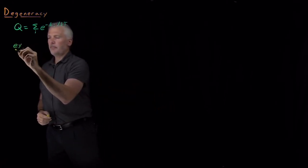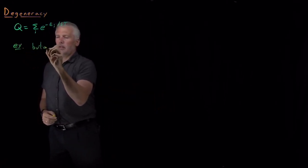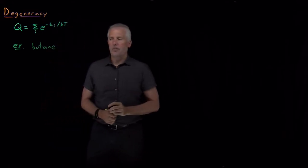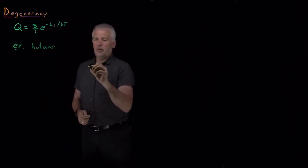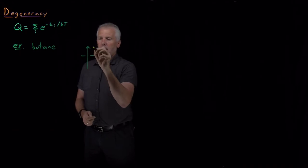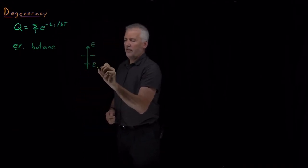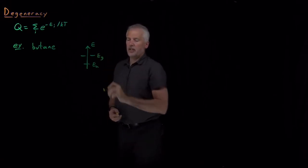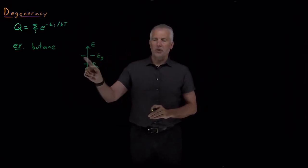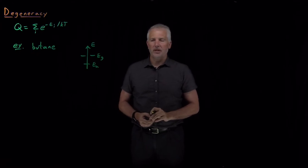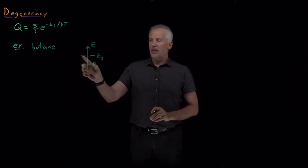For example, we've seen most recently for butane, if we draw an energy ladder, the anti-state has a lower energy than the Gauche states, but there's two Gauche states, Gauche plus and Gauche minus, that have the same energy as each other. Those two states have the same energy.